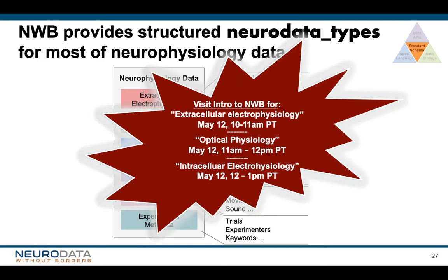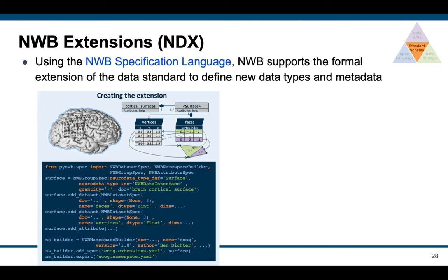NWB provides structured neurodata types for most neurophysiology data from electrophysiology, intracellular ephys, optical physiology, behavior, stimuli, and experimental metadata. Please attend our intros to NWB for electrophysiology, optical physiology, and intracellular ephys, which we're going to hold today. NWB also supports extensions. They use the specification language to define new data types and metadata. Here is a quick example — Brian is going to talk more in detail about how to build and use these extensions.